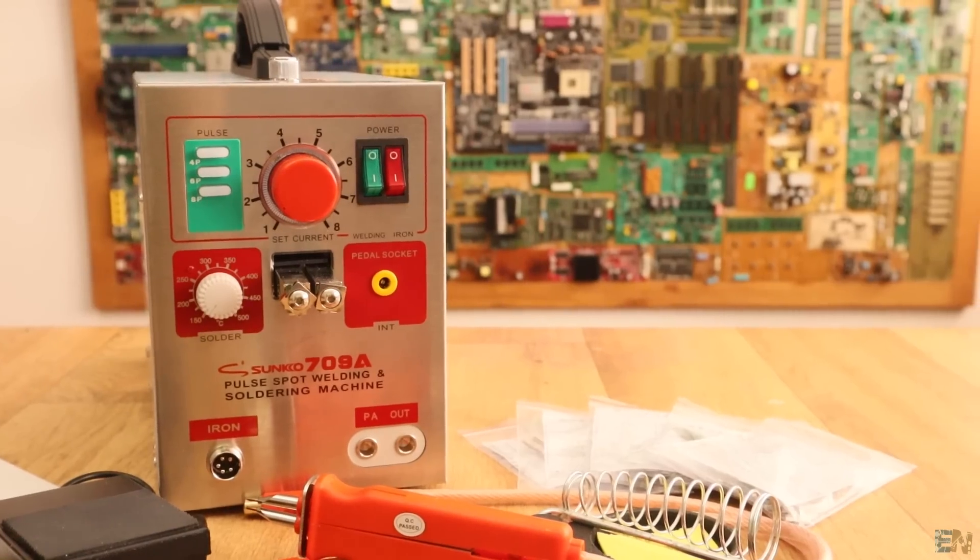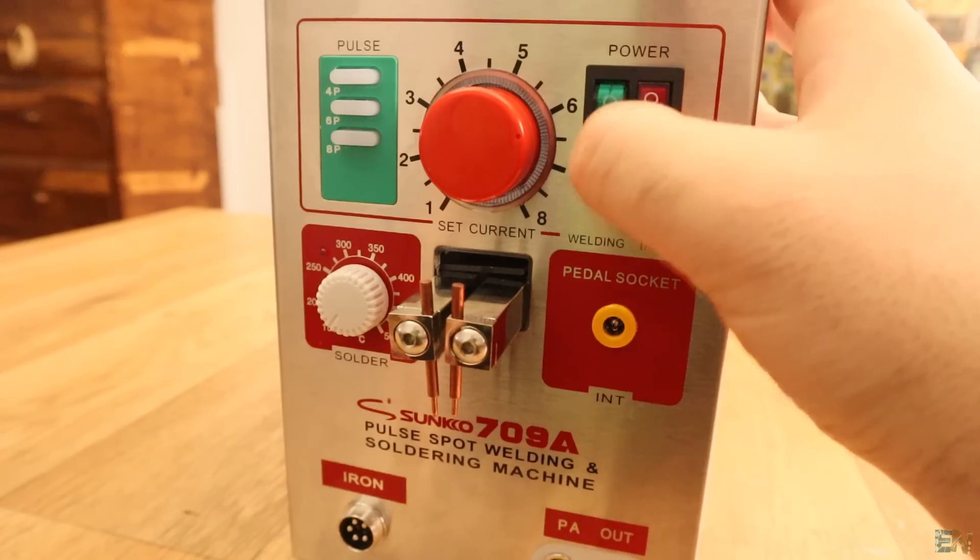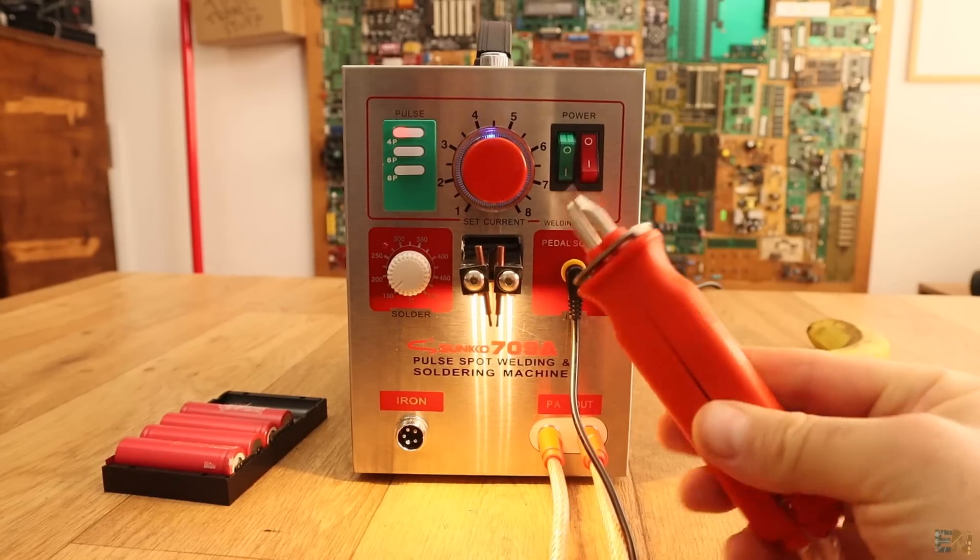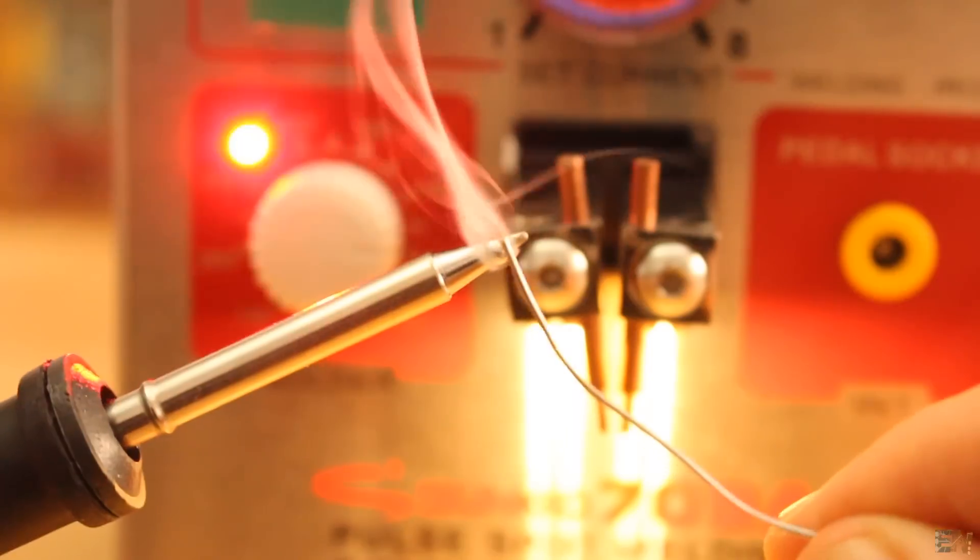Have in mind that this is my first time with this spot welder so everything about this station was new for me too. It has a fixed spot welder and also extension electrodes, if you want to solder separated from the machine. It also includes a soldering iron with a T12 tip.